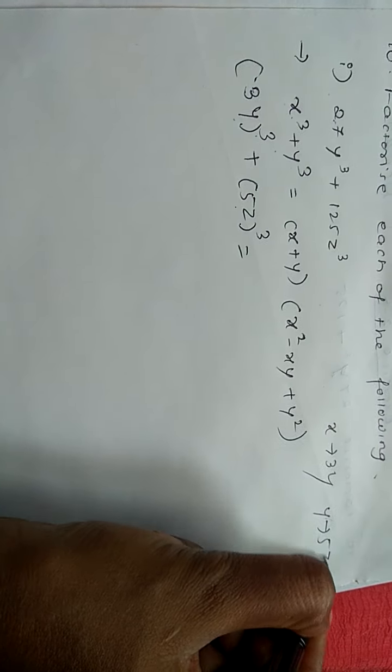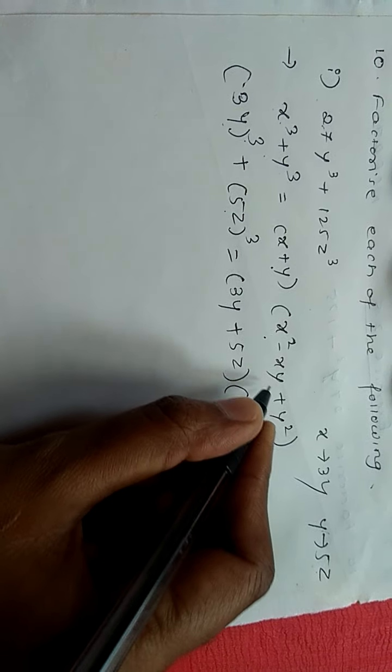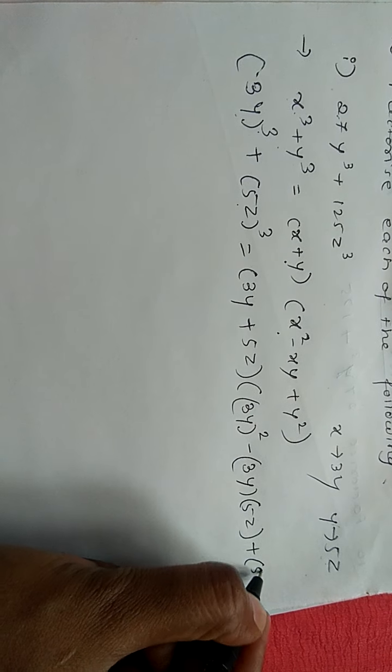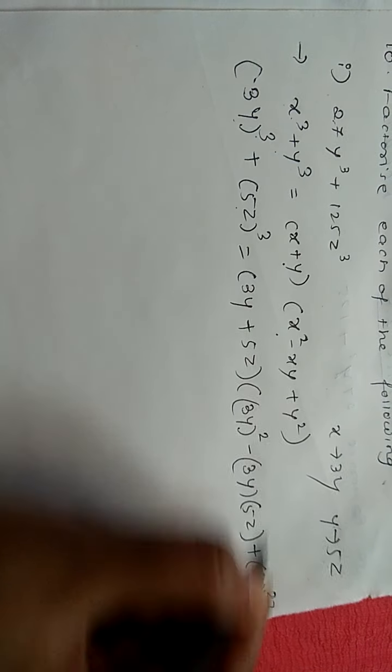So our x is 3y here, that is first term cube. Second term is y, that is 5z. So put these values of x and y in this identity: x is 3y plus y is 5z. Next, x square is 3y square minus x is 3y into y is 5z plus y square that is 5z square, bracket completes.